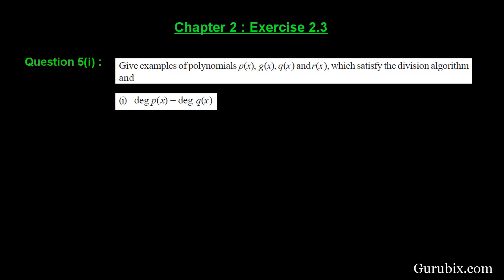Welcome friends, let us talk about the first part of question number 5 of exercise 2.3 of chapter 2. The question asks: give examples of polynomials p(x), g(x), q(x), and r(x) which satisfy the division algorithm, where the degree of p(x) should equal the degree of q(x). Let us see how to do it.